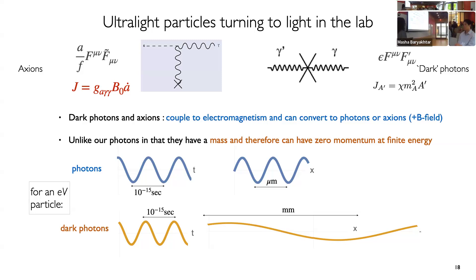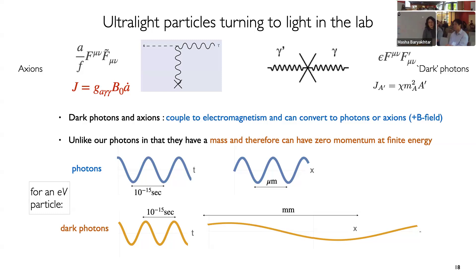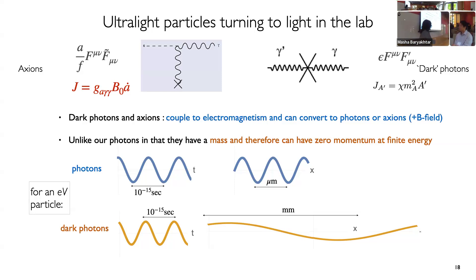These kinds of interactions almost automatically exist if these new particles are there; the question is how strong these interactions are. In addition to these conversion processes being allowed — for example, an axion to a photon, or a dark photon to a photon — you also need it to be kinematically allowed. Unlike our photons, these particles are non-relativistic in our laboratory; otherwise they would not be good dark matter candidates. We know dark matter has a velocity that's about 10 to the minus 3 of the speed of light. So compared to photons, they're basically at rest. A photon and a dark photon with the same frequency will have very different wavelengths.